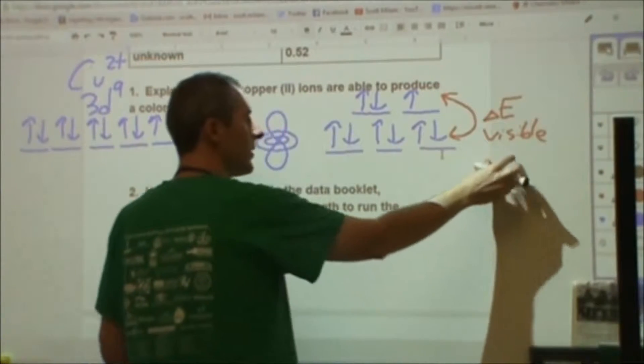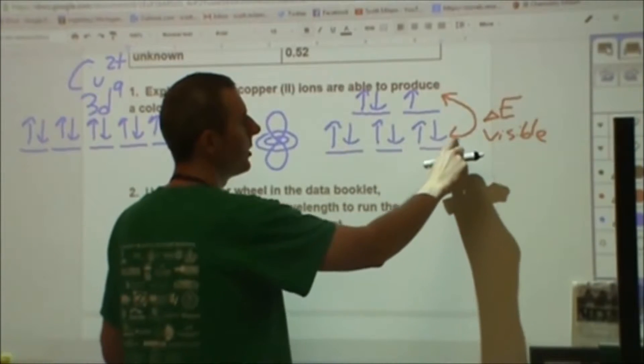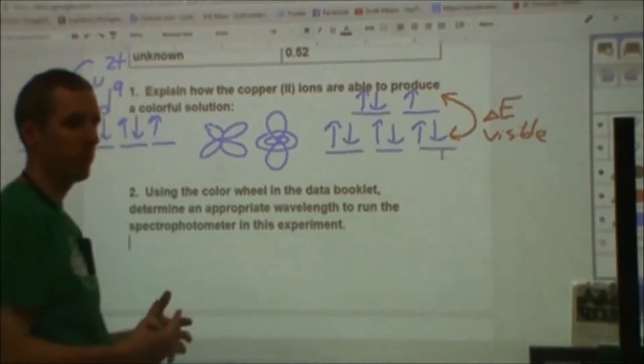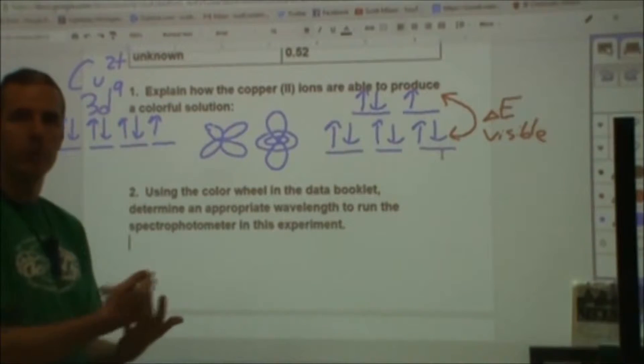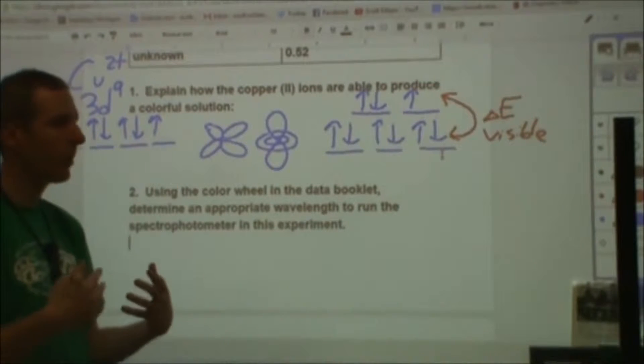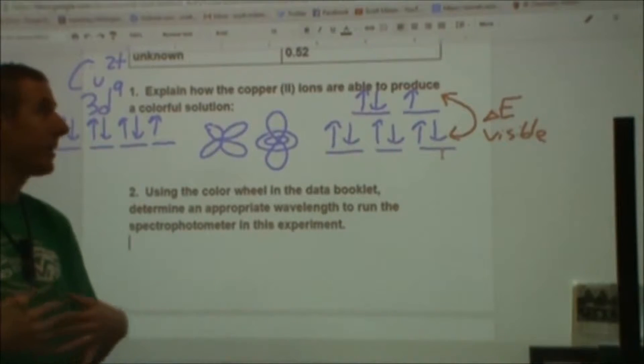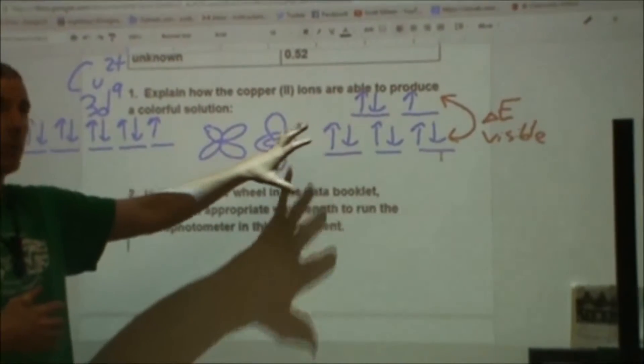The key thing here is that this energy gap is on par with visible light. When the visible light comes in, if we have white light, one particular wavelength of light is going to get absorbed and then re-emitted in random directions. We're not going to see that color make it through the solution. It's going to get absorbed by the solution. Instead of seeing white light coming through, we're going to see the white light minus that particular type of light. And so we're going to see a colorful solution.